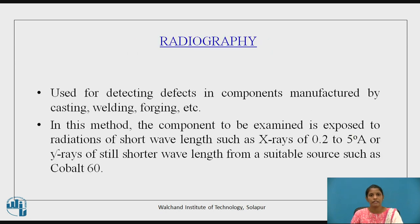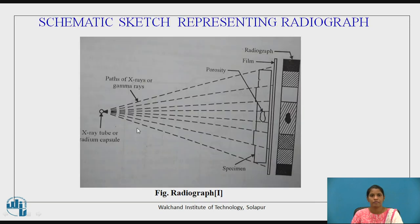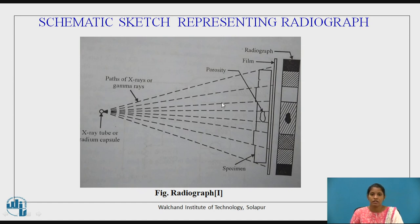Radiography is used to detect flaws in components manufactured by casting, welding, forging, etc. The component to be examined is exposed to radiations of short wavelength. In the schematic diagram of radiography, there is a defect in the specimen and a film where the radiograph is produced. X-rays from an X-ray tube or a radium capsule produce X-rays or gamma rays. There may be porosity, a hole, or a defect in the specimen. A film is kept and a radiograph is produced, which indicates the exact location of the defect.